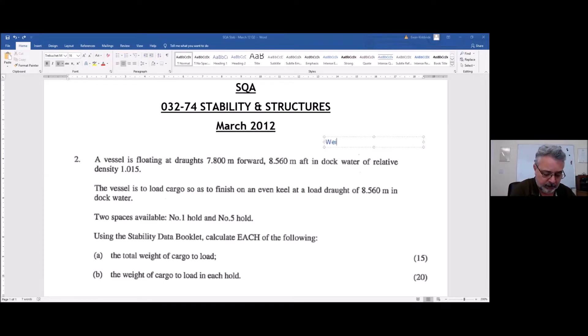Whenever I see dock water density, I'm going to write the formula: weight equals volume times RD. That also means, if you like underwater volume, that's really what we're about, is weight divided by RD. That's critical.